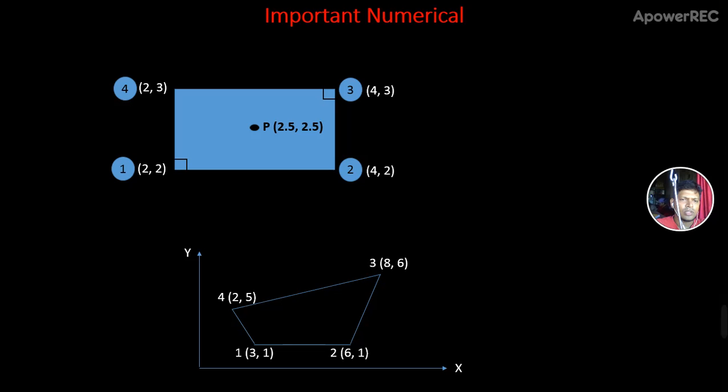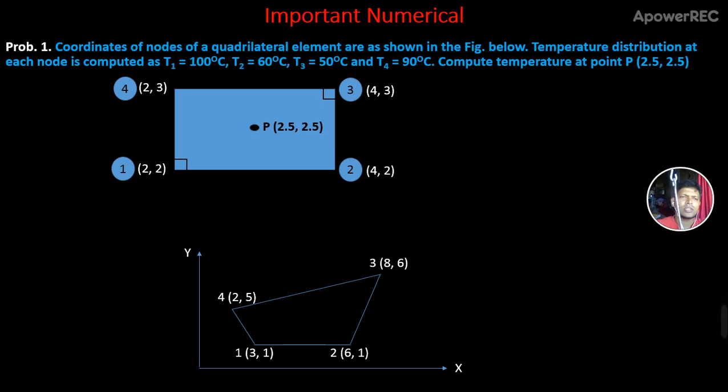The first numerical: I have listed here the coordinates of the nodes of a quadrilateral element as shown in the figure. You need to compute the temperature at point P. You're not reading the question here; it is already given, you can take it down from there.